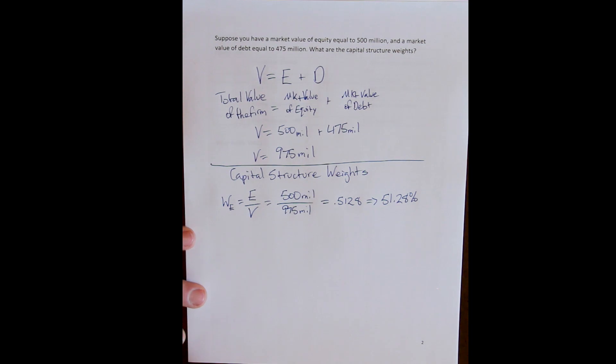Right? So 51.28% of the firm's financing has come from selling equity shares. Right? And so 51% of the firm belongs to its equity owners.